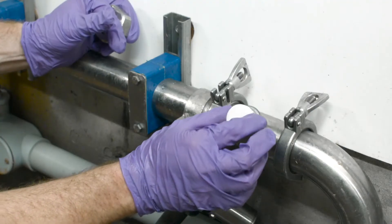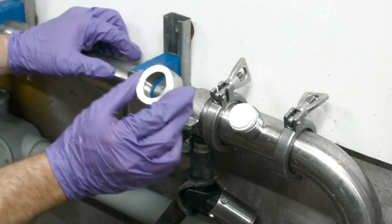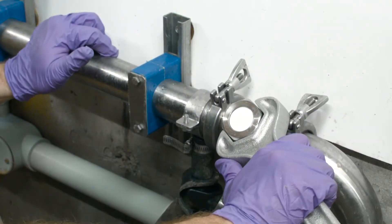Insert the septum into the stainless steel port and hand tighten the nut over the septum. Then, tighten the nut one-eighth turn with a wrench.